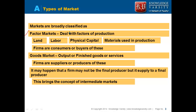A factor market deals with the factors of production. Examples of factors of production are land, labor, capital, and also the raw materials used in production. These are examples of factor markets. Note that these are being used for producing — without them, production cannot happen.